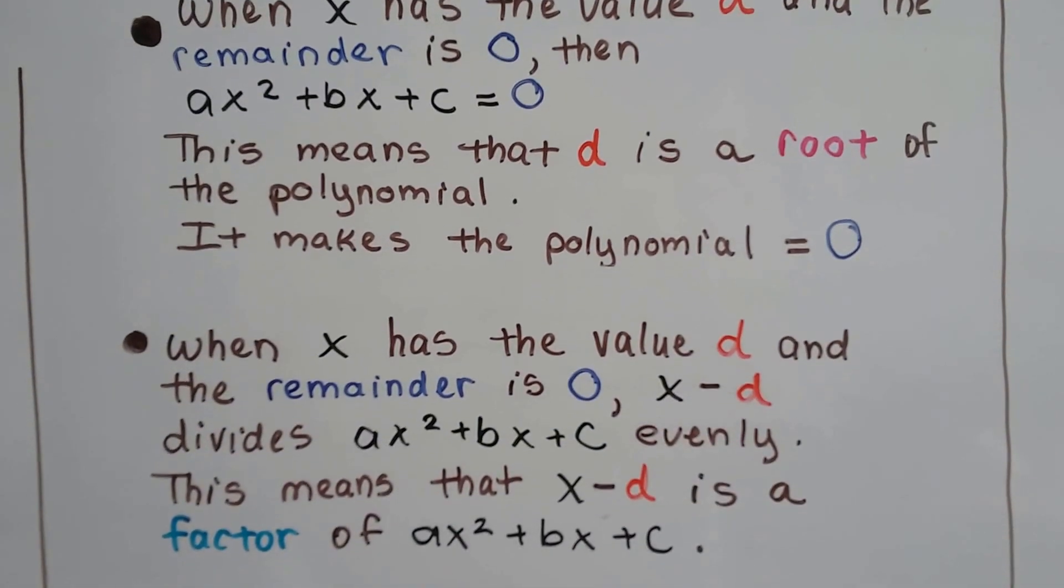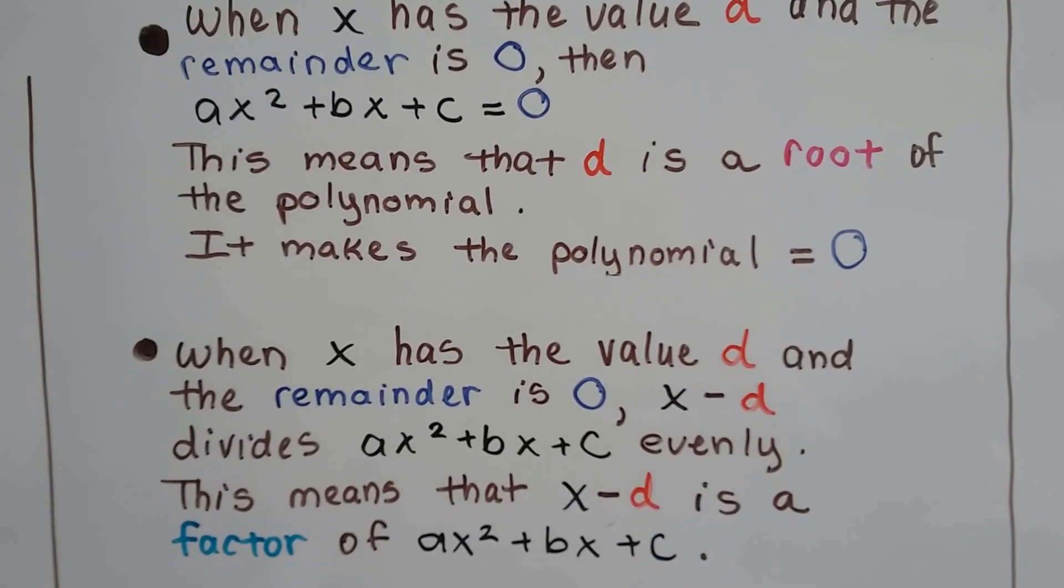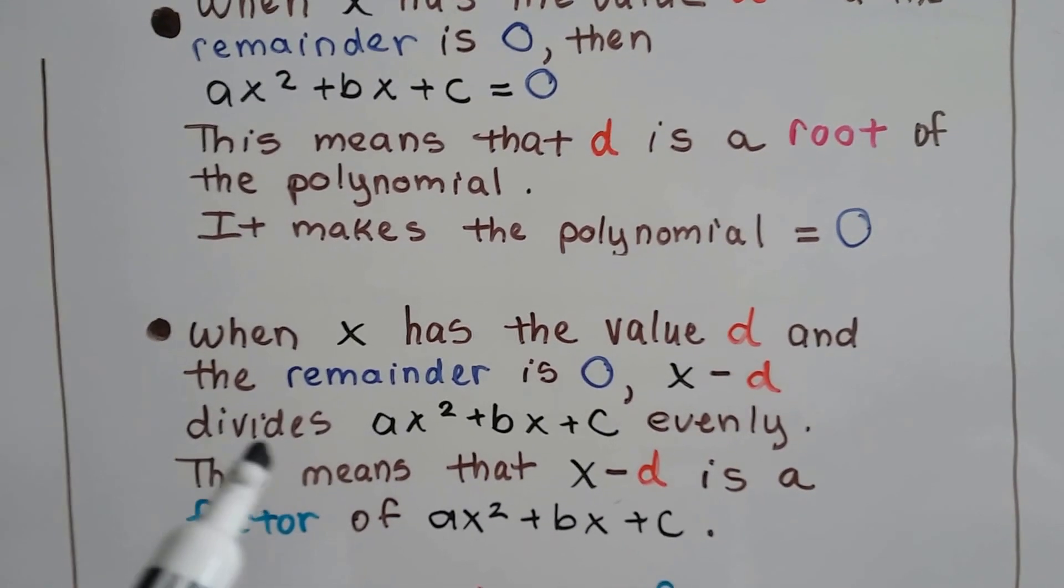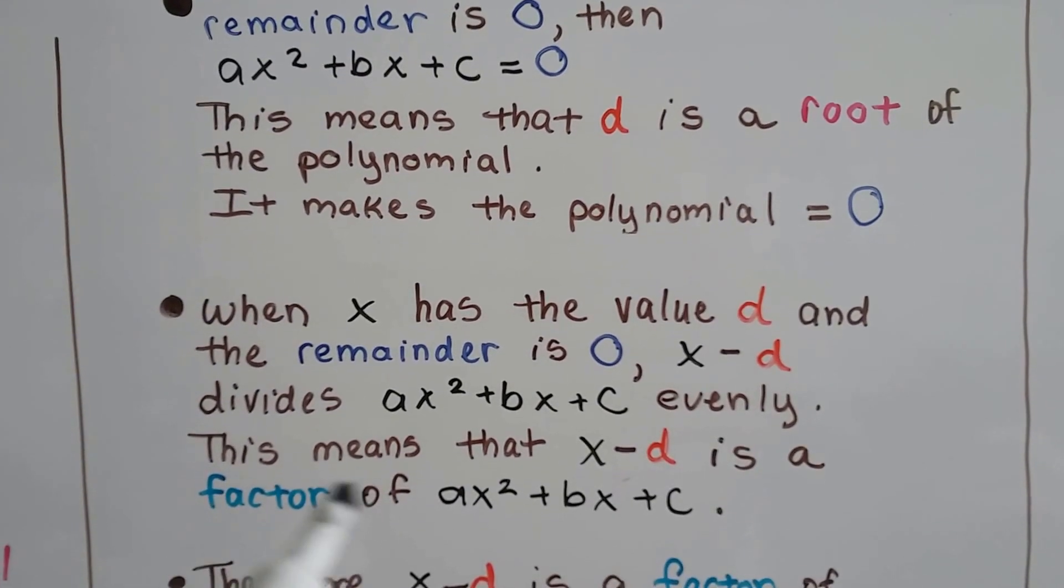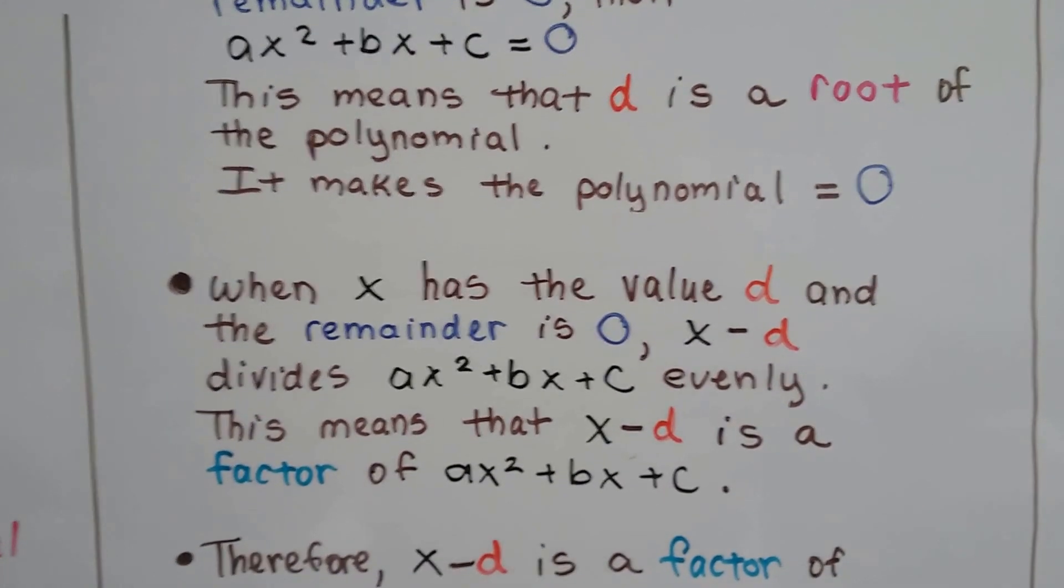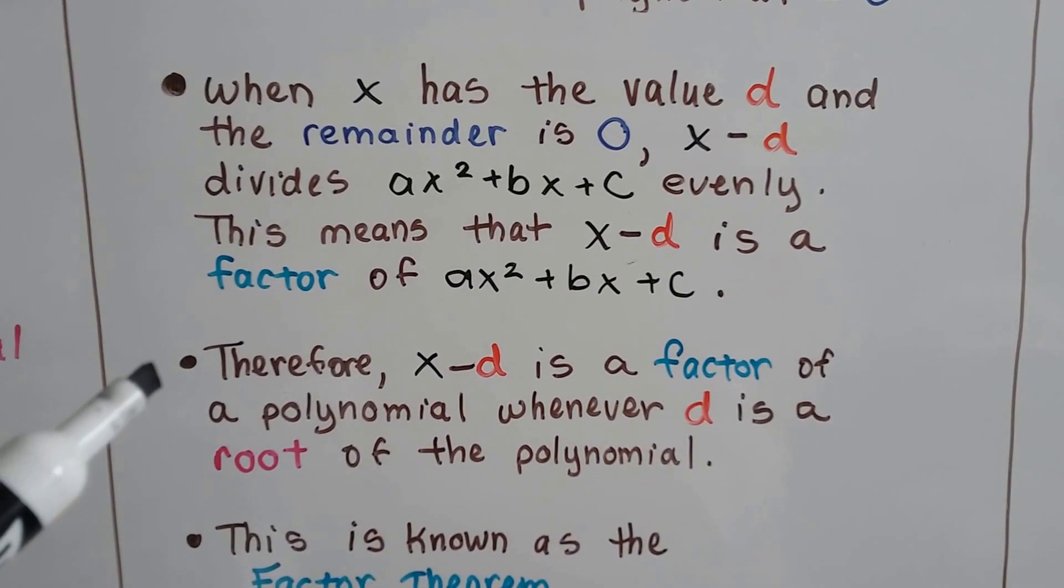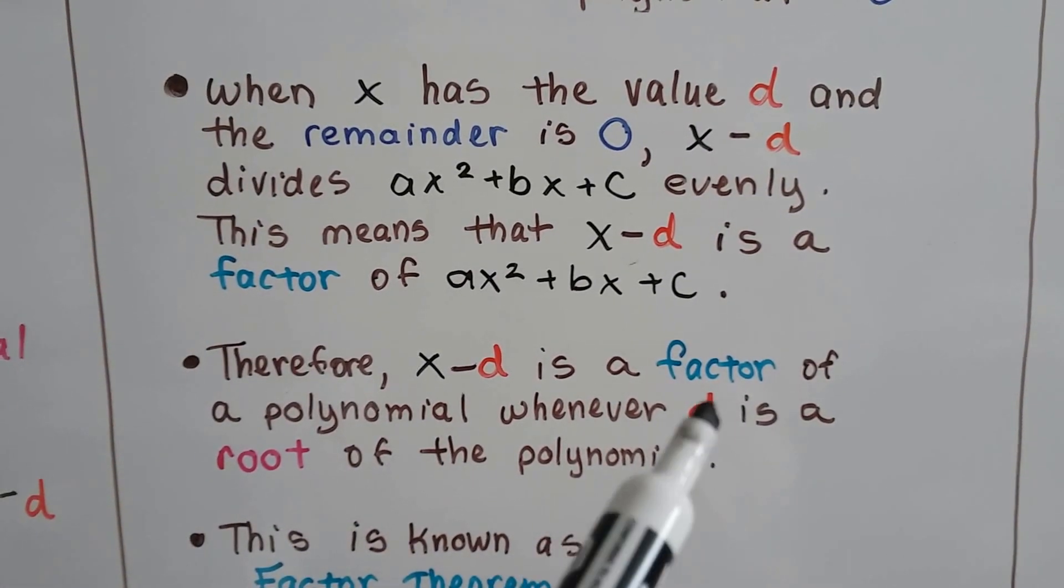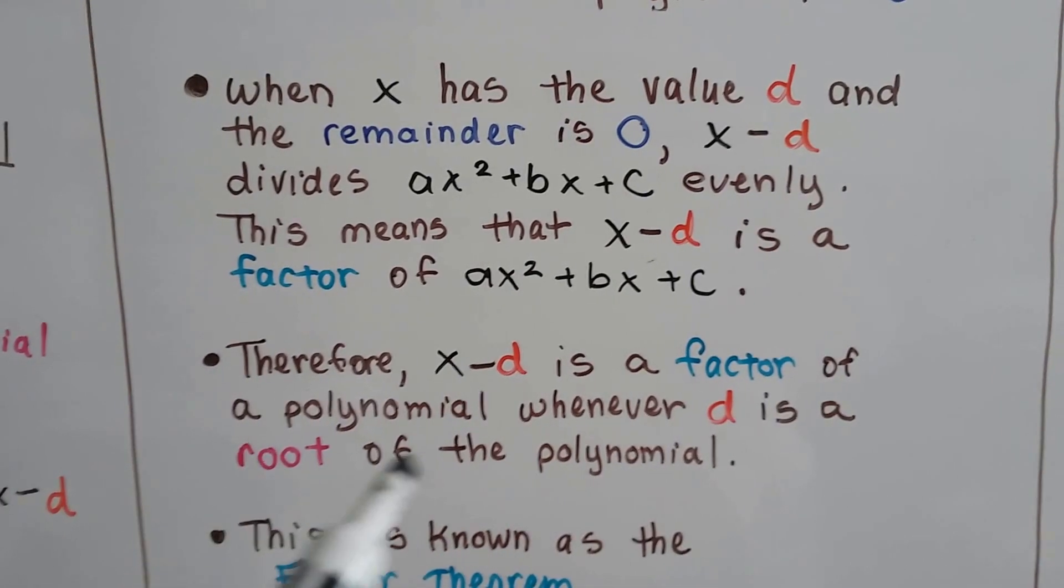When x has the value d, some certain number, we'll call d, and the remainder is zero, then x minus that d divides our polynomial evenly. So that means, because it divided it evenly, that x minus d is a factor of that polynomial. This means that x minus d is a factor of a polynomial whenever that certain number d is a root, when it makes it equal zero of the polynomial.